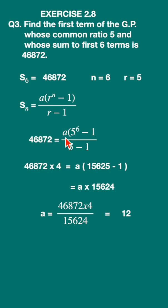We do not know a, leave it as it is. We know S₆ and n = 6, and r = 5. So substitute r = 5, n = 6, and write down the formula.